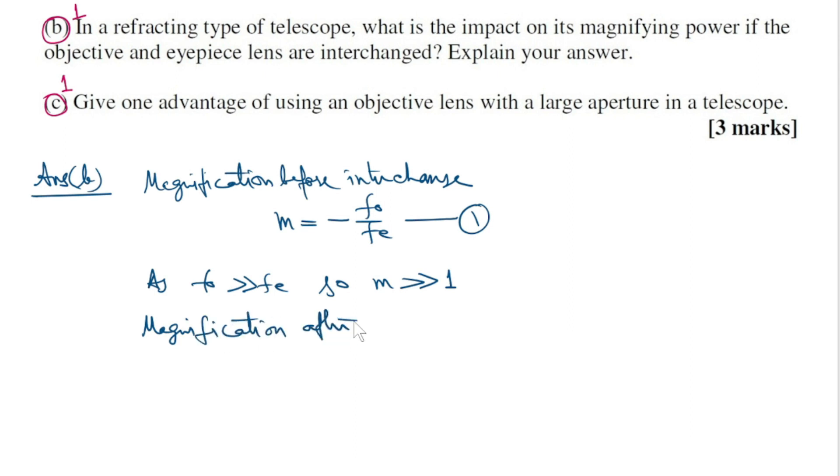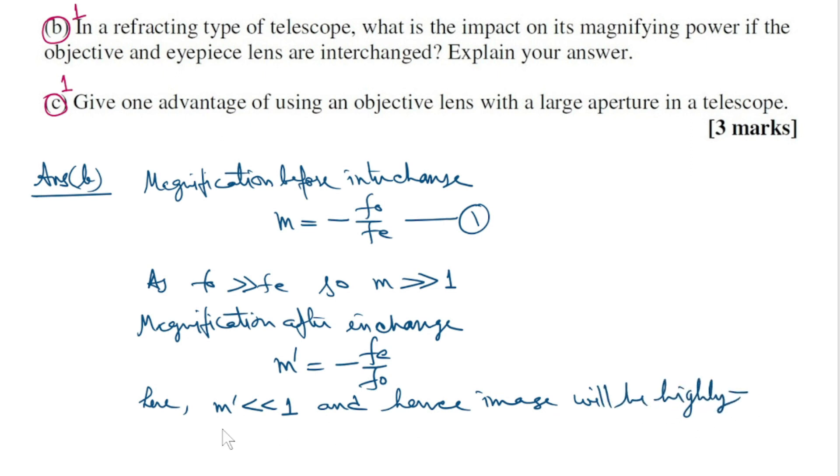Magnification after interchange of lenses: M dash equals to minus FE by FO. Here M dash should be extremely small compared to 1, and hence the image will be highly diminished and of low intensity.